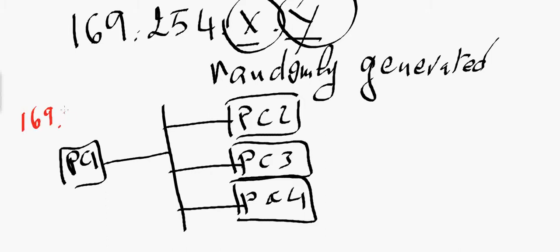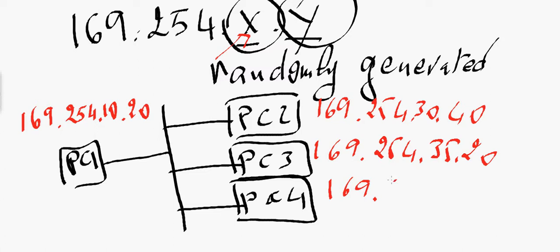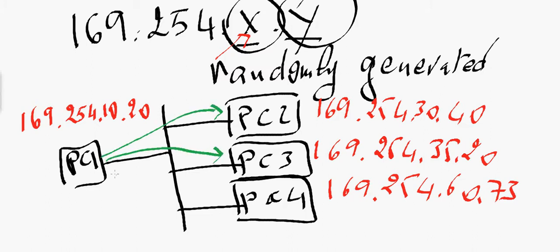PC1 is going to assign itself the IP address 169.254.10.20. PC2 will automatically generate 169.254.30.40. PC3 will generate 169.254.30.20, and PC4 will generate 169.254.60.70. These computers now have these IP addresses and they can communicate directly — PC1 can communicate with PC2, PC3, and PC4. Each PC can communicate with any other PC on the same LAN using this automatically assigned IP address. X and Y are always assigned randomly.